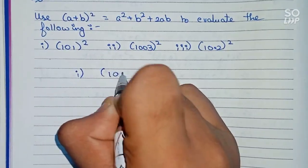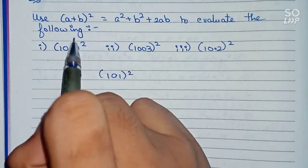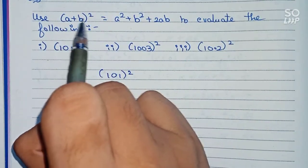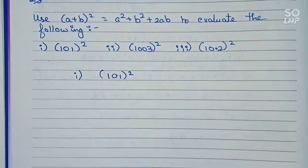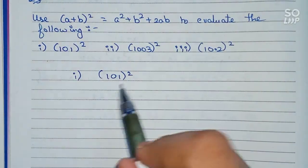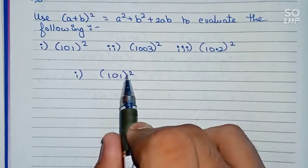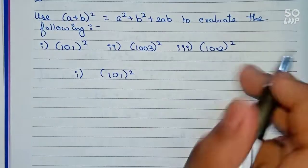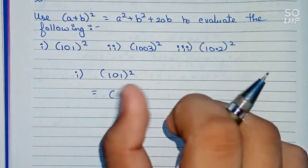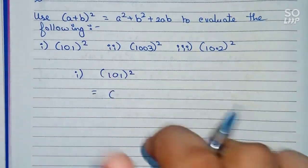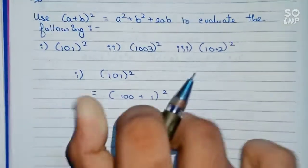Question number one says 101 whole square. The question says we have to use the formula (a + b)², so we have to express 101 in terms of two numbers whose sum equals 101. We cannot simply multiply — we have to use this formula only. So 101 whole square means we need two numbers whose sum is 101, and the easiest one is 100 plus 1 whole square.